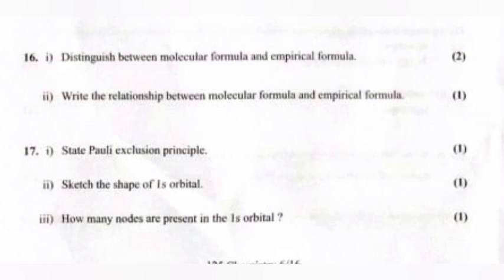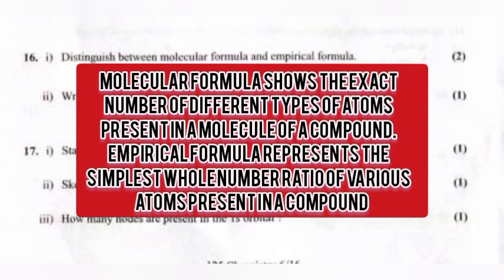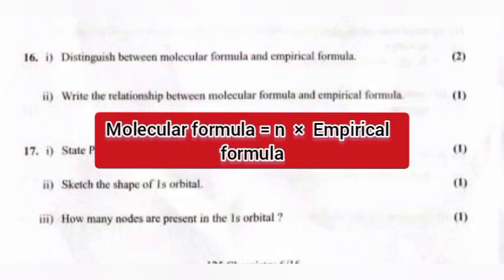Question 16: 1. Distinguish between molecular formula and empirical formula. 2. Write the relationship between molecular formula and empirical formula. Answer: 1. Molecular formula shows the exact number of different types of atoms present in a molecule of a compound. Empirical formula represents the simplest whole number ratio of various atoms present in a compound. 2. Molecular formula equals N into empirical formula.